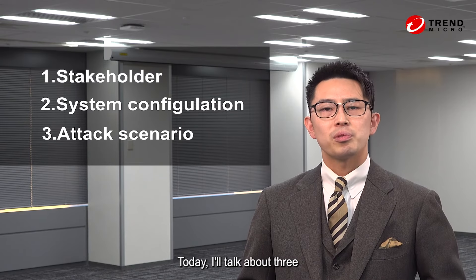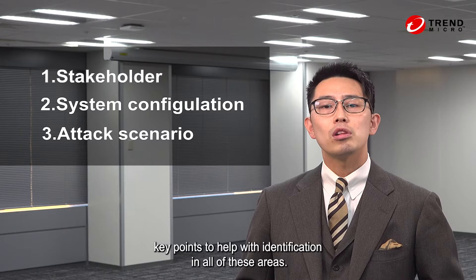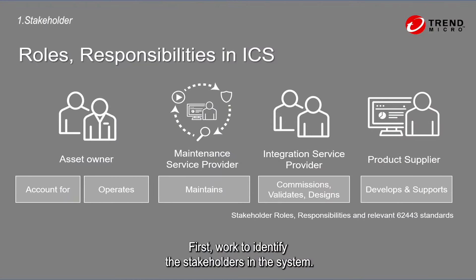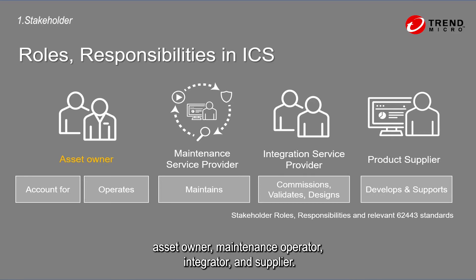I'll talk about three key points to help with identification in all of these areas. First, work to identify the stakeholders in the system. The series of ICS security standards known as IEC 62443 specifies four types of stakeholders: asset owner, maintenance operator, integrator, and supplier.